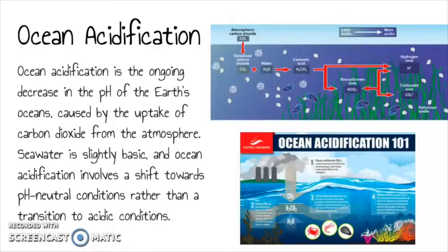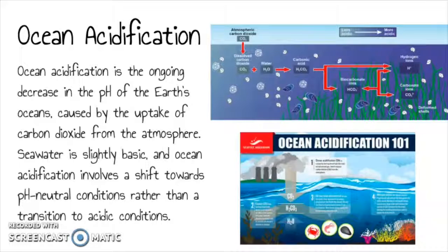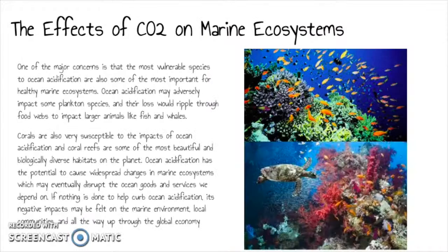When carbon dioxide enters the ocean, it combines with seawater to produce carbonic acid, which increases the acidity of water, lowering its pH. Although it is unlikely that the ocean will ever become actual acid or fall below a pH of 7, the term acidification refers to the process of the oceans becoming more acidic.